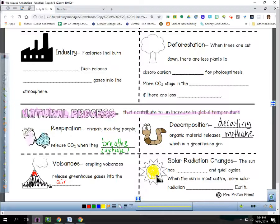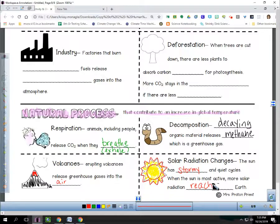And then solar radiation. The sun has itself both stormy and quiet cycles. During those times when the sun is most active, more solar radiation is going to reach the earth.